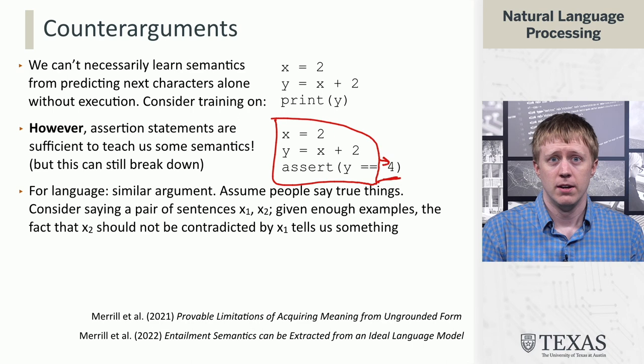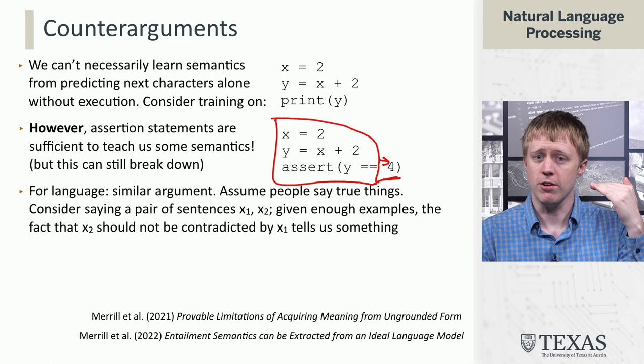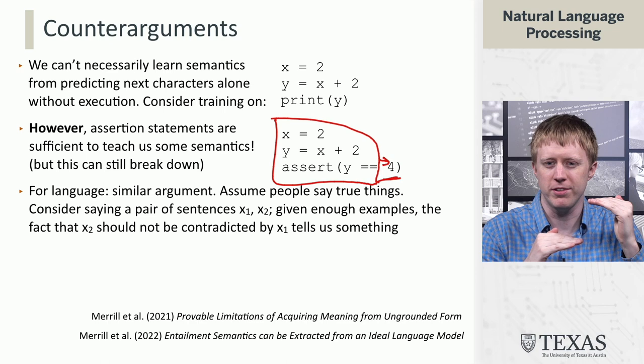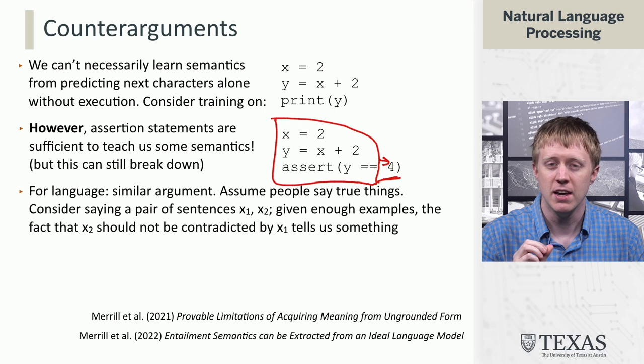There's a similar argument that can be made for natural language, which relies on the assumption that people say true things. If you consider a pair of statements by the same person — x1 followed by x2 — given enough examples, you learn to model the distribution of x2. And if you assume that what people say is true, you're going to learn to assign more probability mass to true things rather than false things. So you learn a little bit of meaning, which creeps in even from just doing raw language modeling.